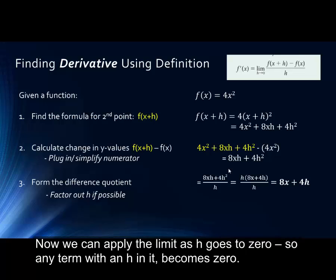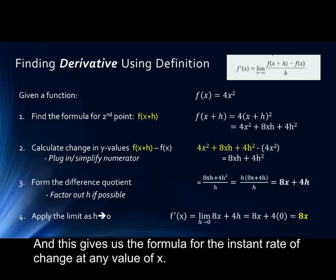Now we can apply the limit as h goes to 0. So, any term with an h in it now becomes 0, and this gives us the formula for the instant rate of change at any value of x.